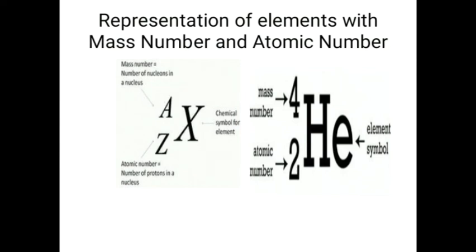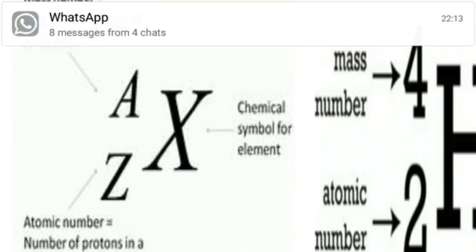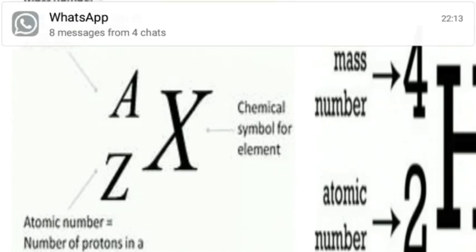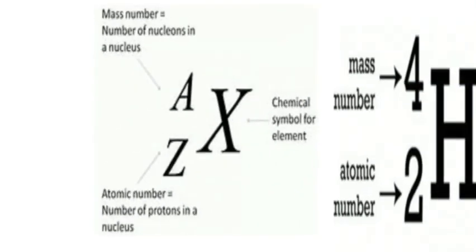Here, the letter X represents an unknown element. A represents the mass number. We write X as the chemical symbol for the element, with A on the upper left-hand side and the atomic number on the lower left-hand side.